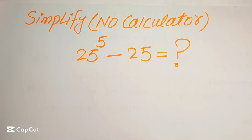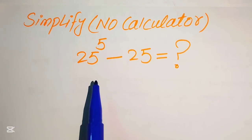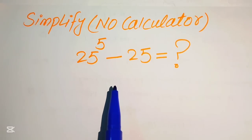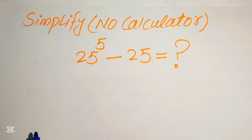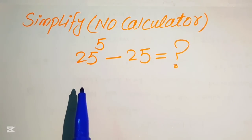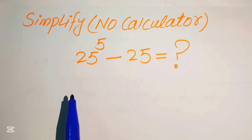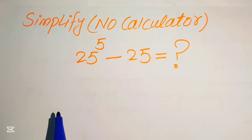Hello everyone. How to simplify this nice algebraic expression: 25 to the power of 5 minus 25. We write this algebraic expression into simplified form. Remember, a calculator is not allowed in this problem, which means we will show all of the working on paper.